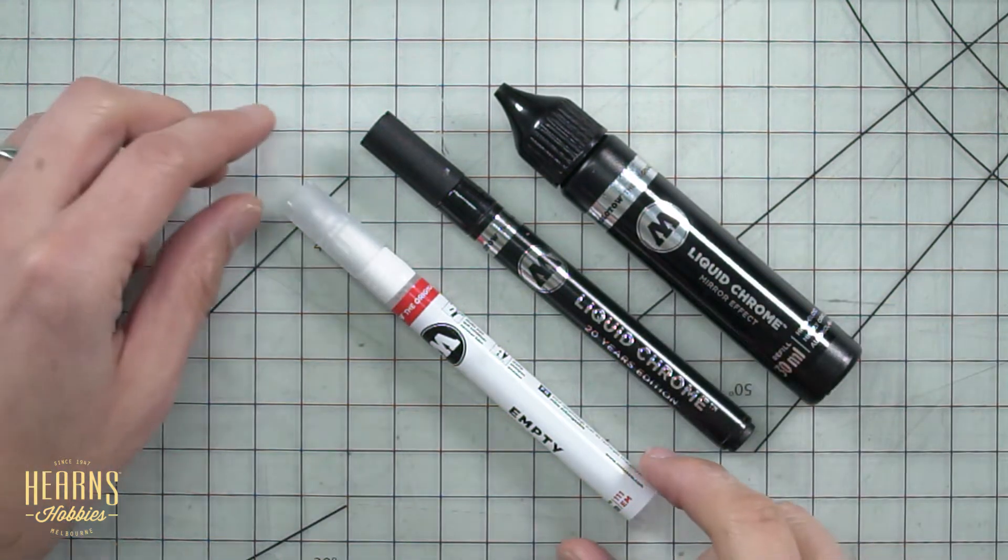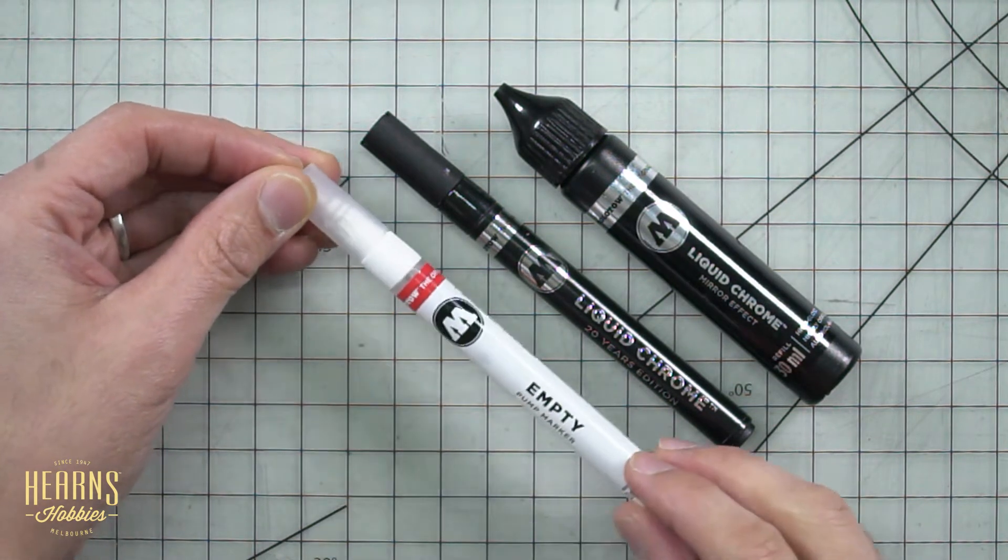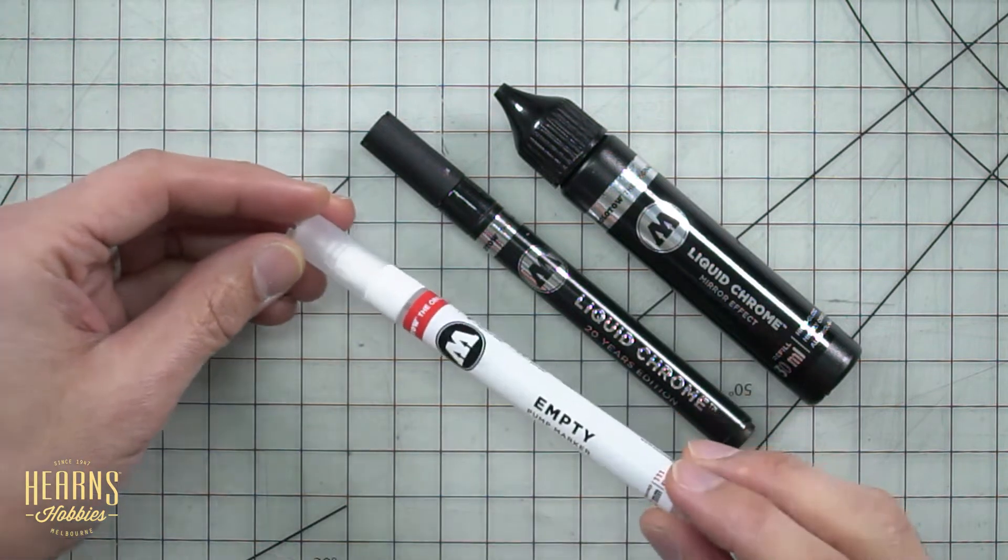Now what I also have here is an empty marker, so the empty markers are actually easier for me to show you how they come apart. So how about I open this up and I'll show you what it consists of.